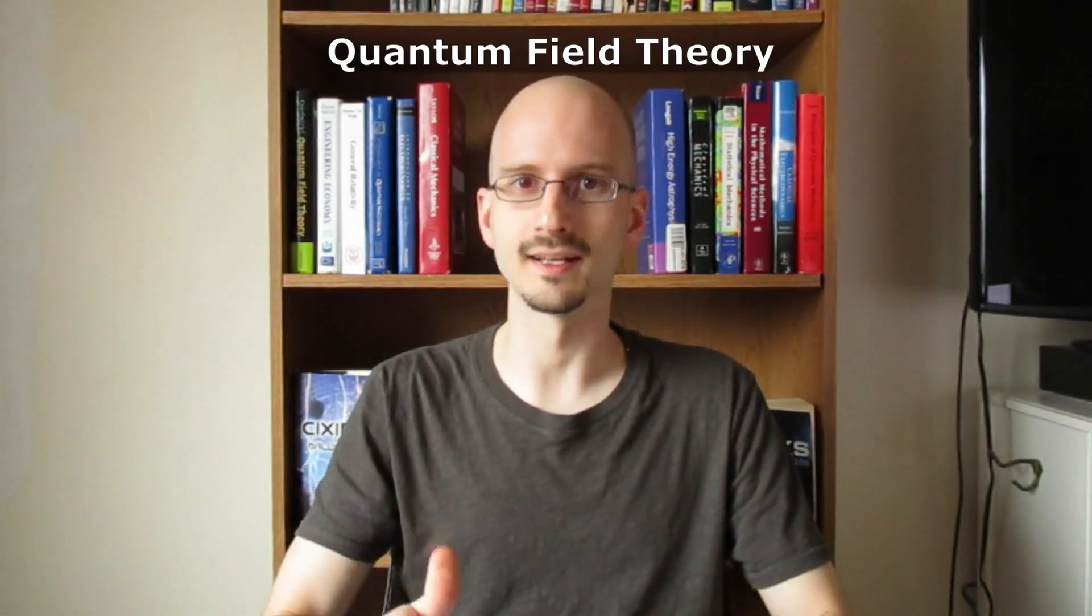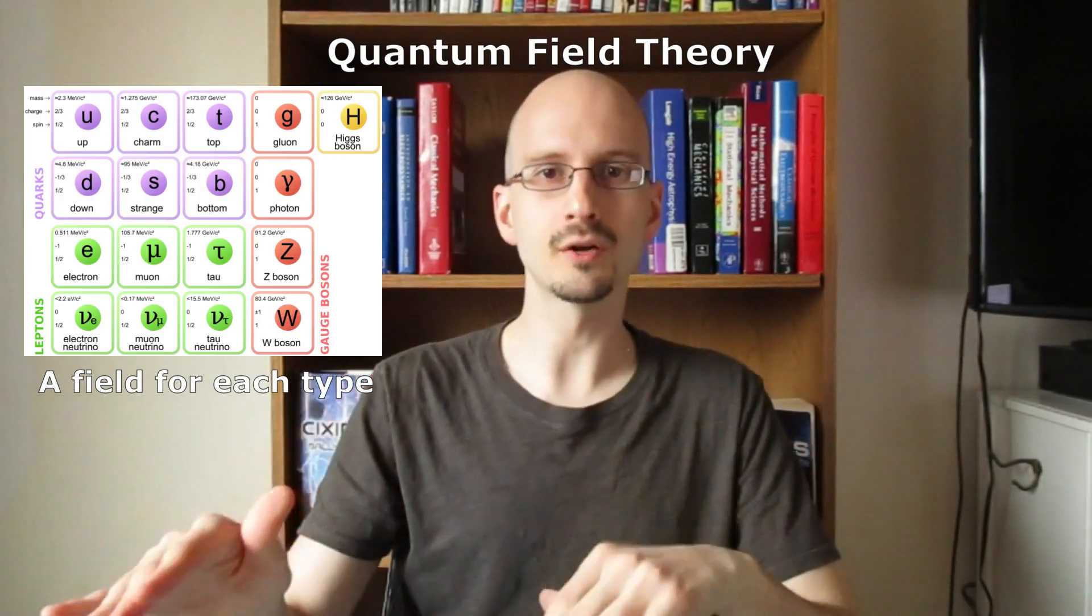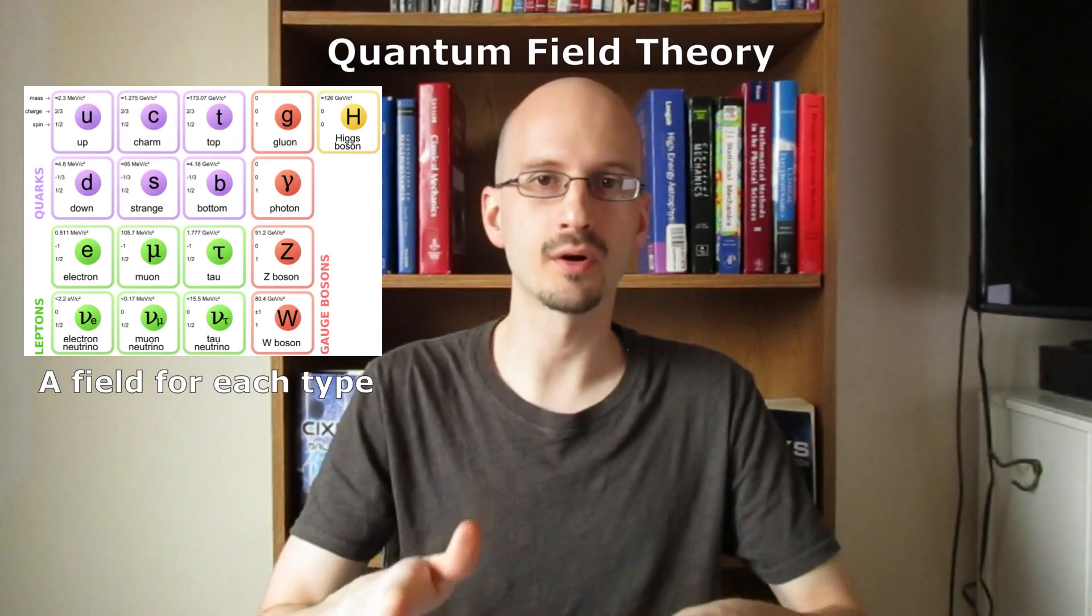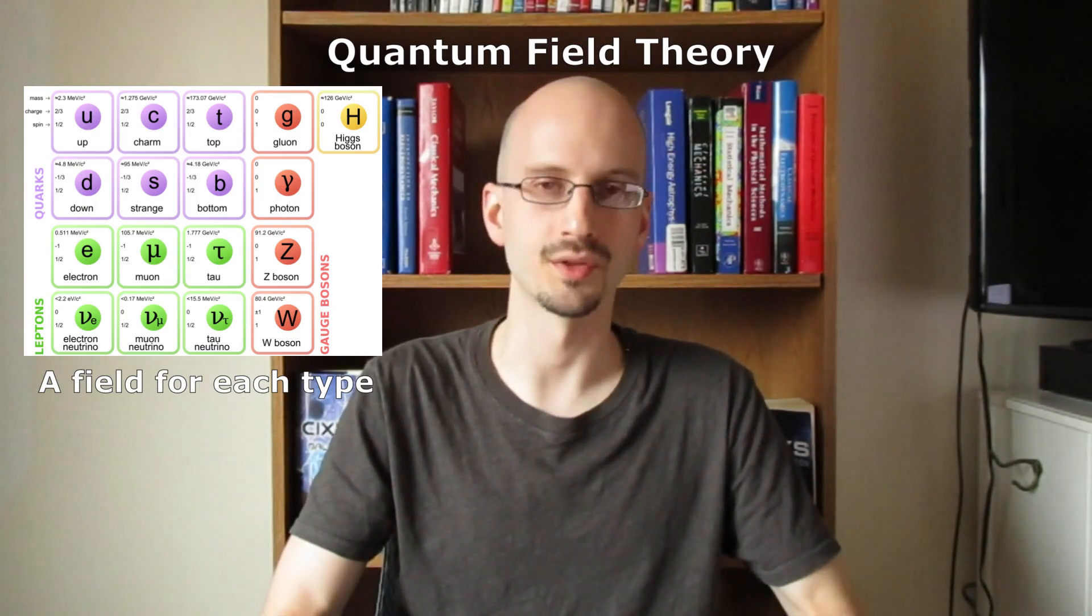Quantum fields are things like the electron field, the quark field, the neutrino field, and for light, the electromagnetic field. Yes, that same electromagnetic field we learn about in physics too. Quantum field theory gives us a framework for calculating how particles will interact and react with each other, leading to the field of particle physics, the stuff that's studied at CERN.